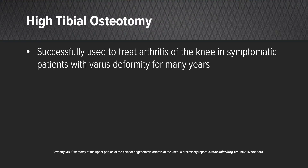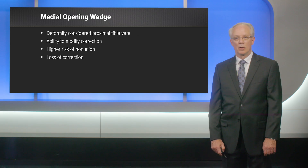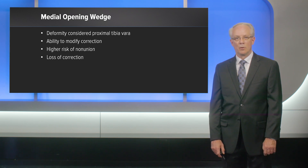The high tibial osteotomy has been successfully used to treat arthritis of the knee in symptomatic patients with varus deformity for many years. It was initially popularized by Coventry as a lateral closing wedge osteotomy. The current standard for high tibial osteotomies is a medial opening wedge osteotomy, because the deformity is considered to be a proximal tibia vara and you have the ability to modify your correction.